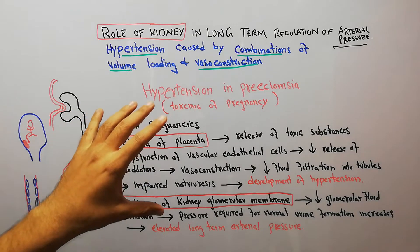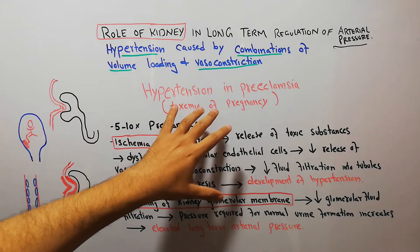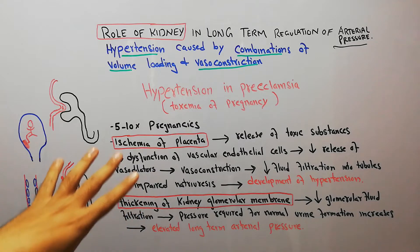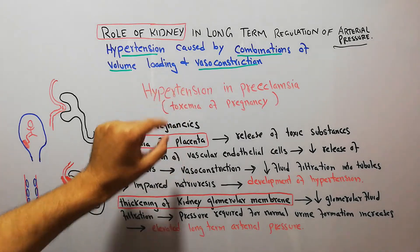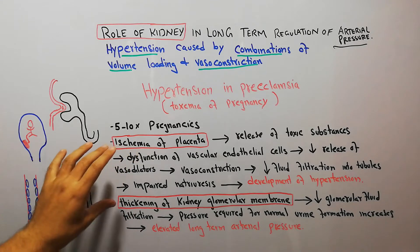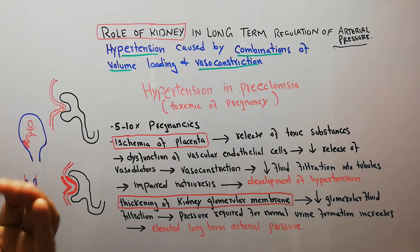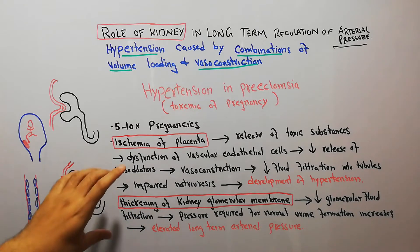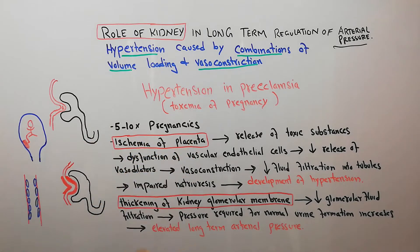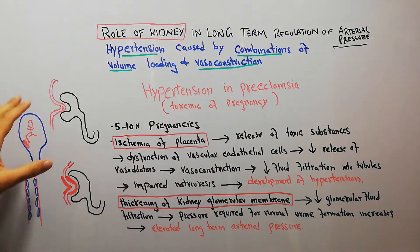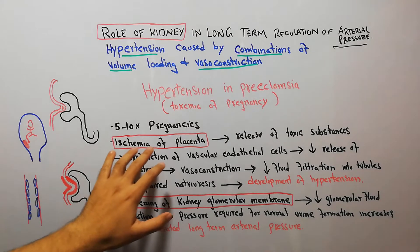We are not going into the detail of toxemia of pregnancy regarding its diagnosis and treatment because we are discussing it from the physiology point of view, focusing on its hypertension only. There are two theories about how hypertension occurs in preeclampsia — one involves ischemia of the placenta and the second involves thickening of the kidney glomerular membrane.